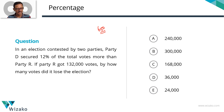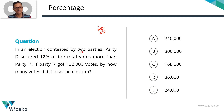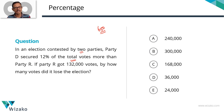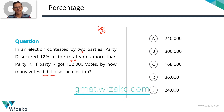In an election contested by two parties, party D secured 12 percentage of the total votes more than party R. There are two key pieces of information: only two parties contested, and party D got 12% more of the total votes than party R. If party R got 132,000 votes, by how many votes did it lose the election?